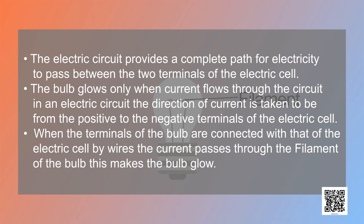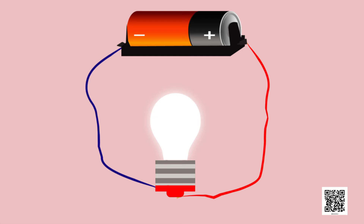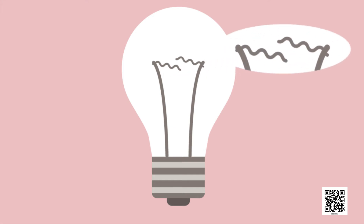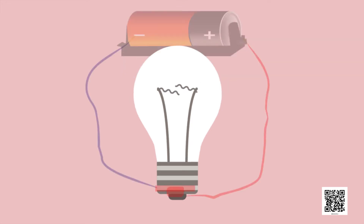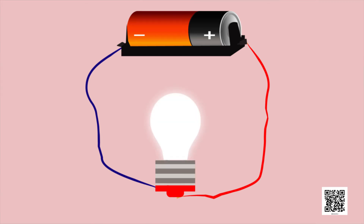Sometimes an electric bulb does not glow even if it is connected to the cell. This may happen if the bulb has fused. Look at a fused bulb carefully. An electric bulb may fuse due to many reasons — one reason is a break in its filament. A break in the filament of an electric bulb means a break in the path of the current between the terminals of the electric cell. Therefore, a fused bulb does not light up as no current passes through its filament.